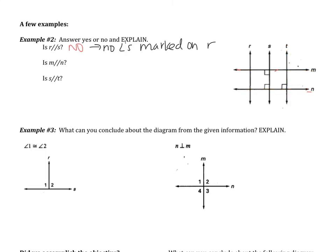Is M parallel to N? If M is parallel to N, I have three options for a transversal. If I look at T, I have one angle marked on N — this right angle — and nothing marked on M. If I look at S, I have one right angle on M and one right angle on N. In that case, yes, the lines are parallel because they are both perpendicular to line S. That's what the theorem on the previous page said. In this case, our two right angles are consecutive interior angles — they're supplementary, which makes the lines parallel.